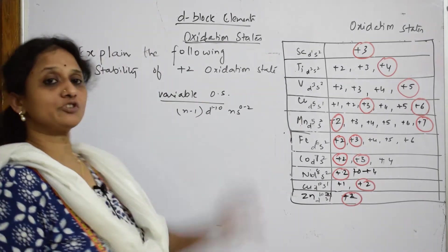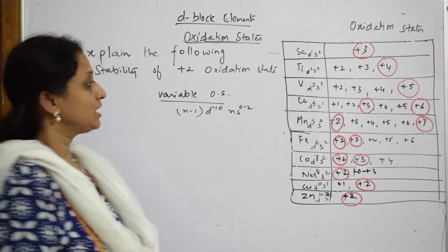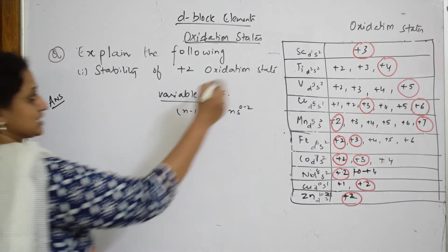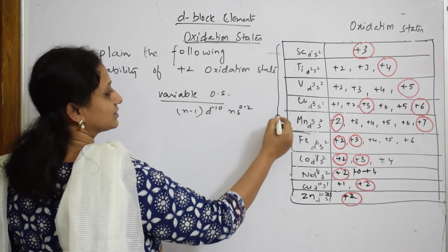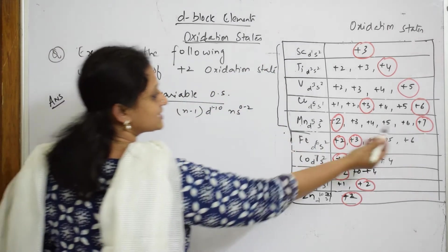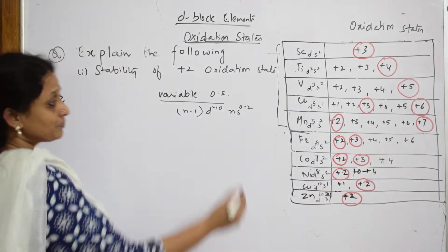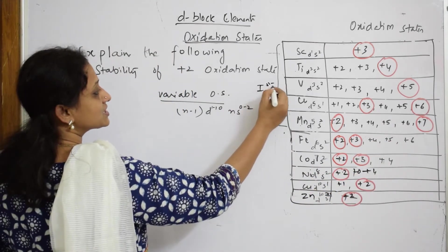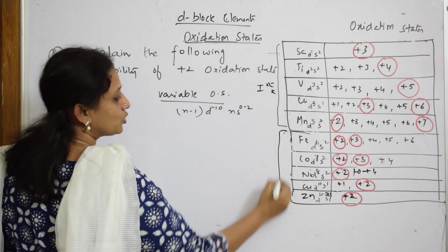Now what is observed? They're asking us to speak only in terms of +2 oxidation state. So when I have to go with the first series, let me speak about till here because this is the break point. Till 7, then it started decreasing.